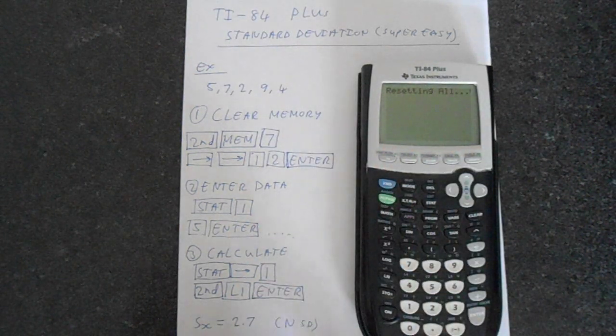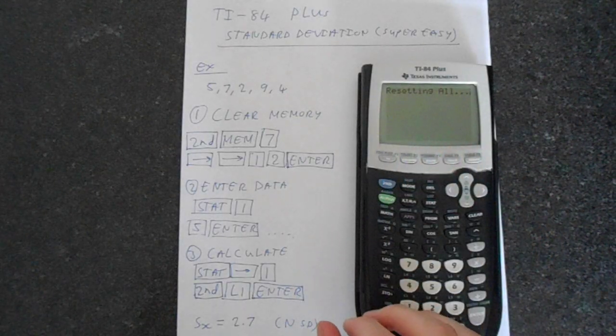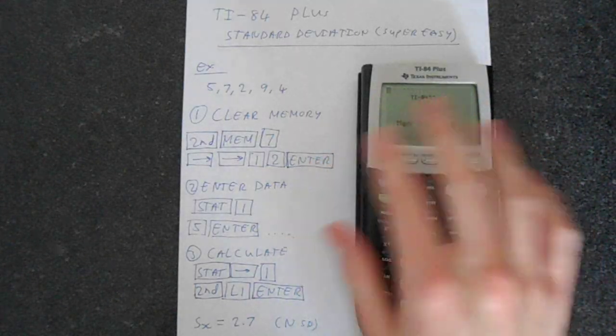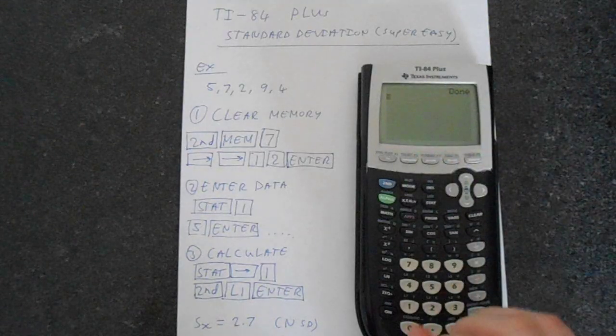And this should reset everything about the calculator and it takes a minute to do this. This clears all of the lists, everything. There you go, memory cleared, enter and it comes up with done.